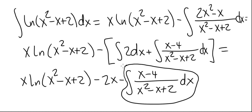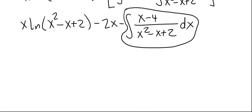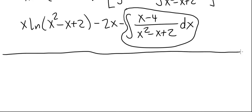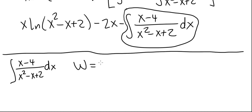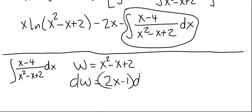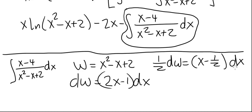This is now an integral of a rational function where the degree in the denominator is strictly larger than the degree in the numerator. However, the polynomial x squared minus x plus 2 is irreducible — you should check that. It cannot be factored, so we can't write it as a product of two linear terms. What we have to do is use substitution first. For the integral of x minus 4 divided by x squared minus x plus 2, let w be the denominator, x squared minus x plus 2, so dw equals 2x minus 1 dx, meaning one half dw equals x minus one half dx. When we look at the numerator, we have x minus 4 instead of x minus one half.